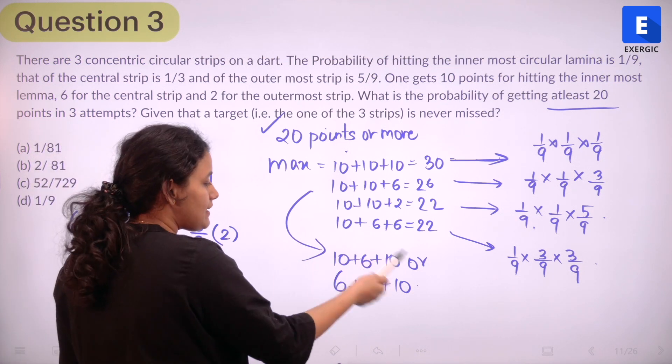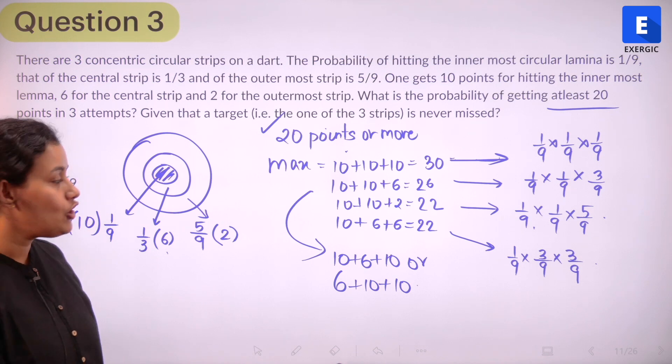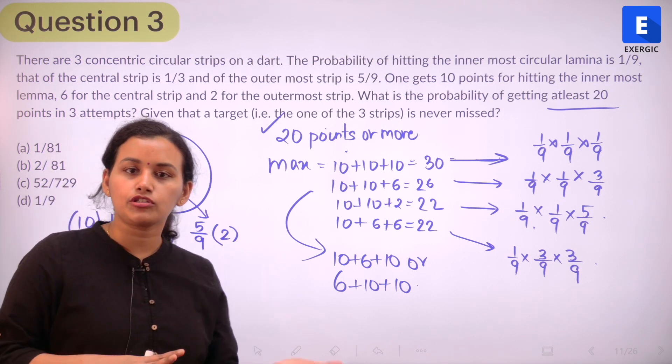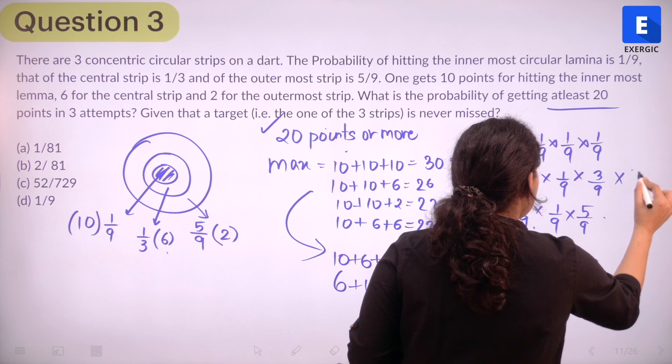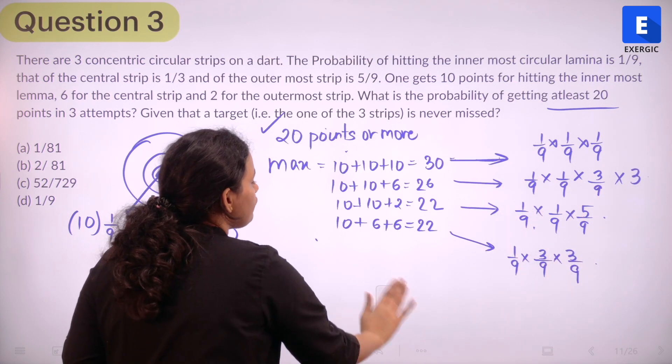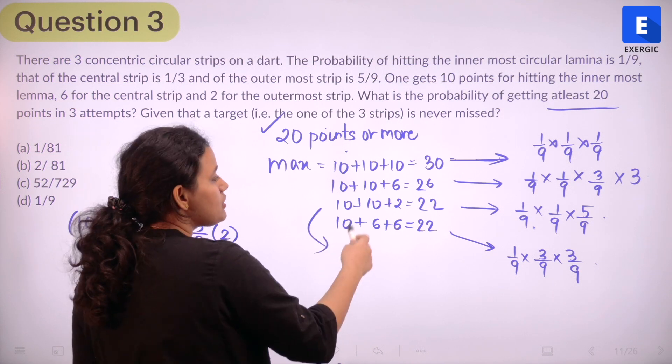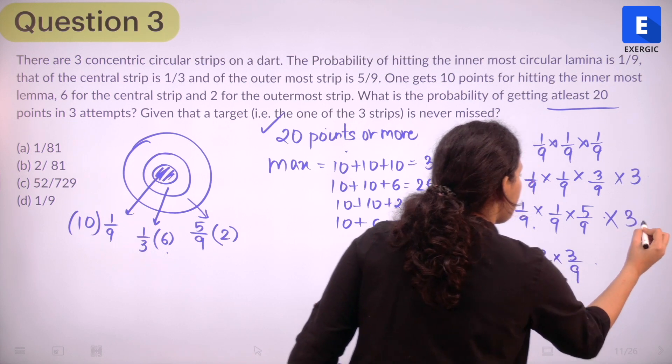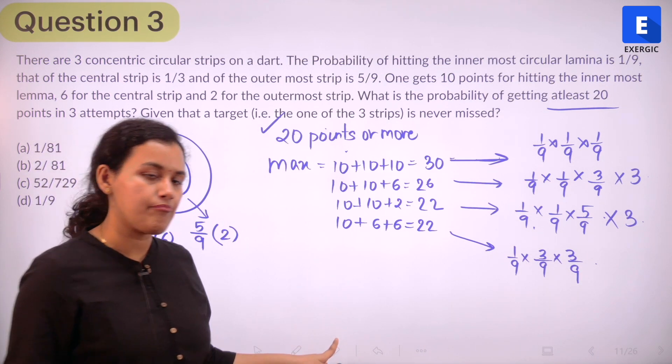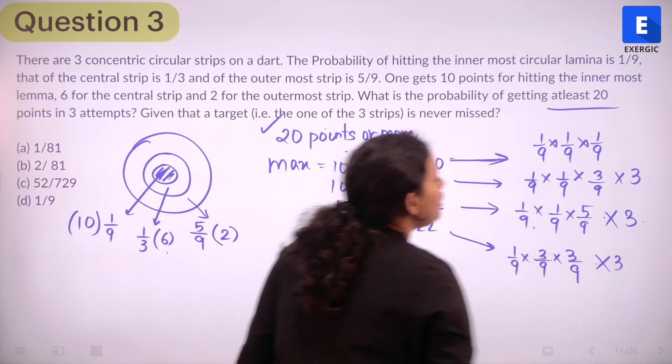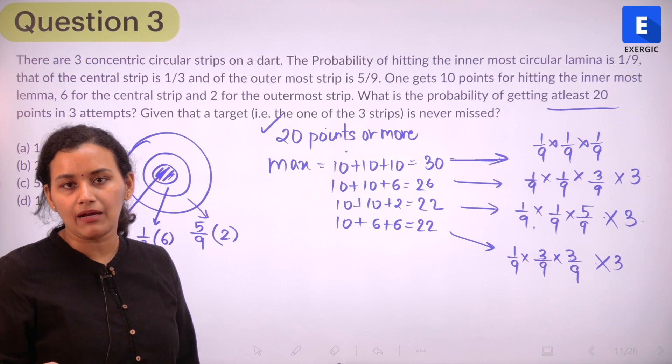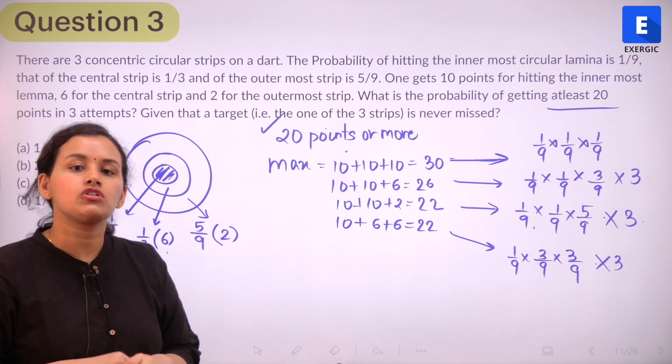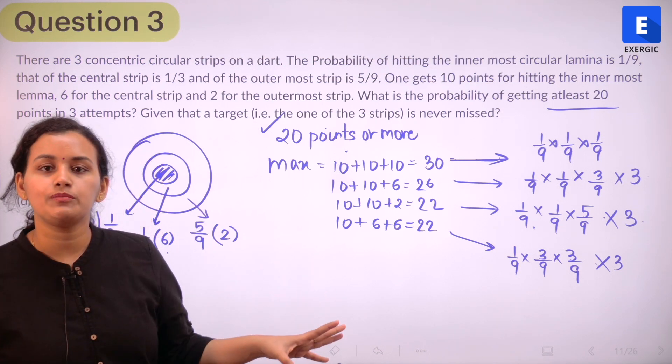We also need to consider the arrangement. It can be 10 plus 10 plus 6, it can be 10, 6, 10 or it can be 6, 10 and 10. So what are the different possibilities that we have? We have three possibilities. Or to be more precise, it is 3 factorial by 2 factorial but 3 will do in this case. The same thing is going to apply for the next case as well. It can be 10 plus 2 plus 10, it can be 2 plus 10 plus 10. Anyway, it is also going to be multiplied with 3. What about the last case? Same. So this is also going to be multiplied with 3. What about my first case? First case, it does not matter because in all of the three instances, you're hitting right in this innermost portion. So it doesn't matter.